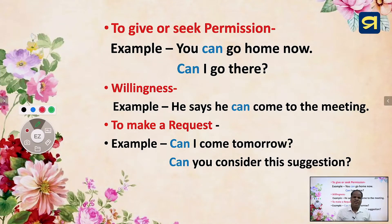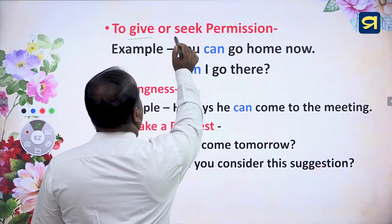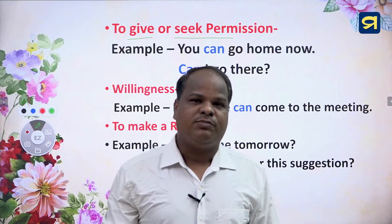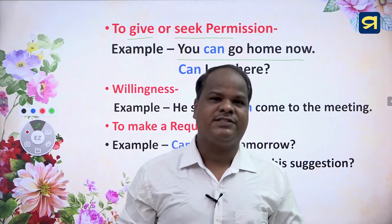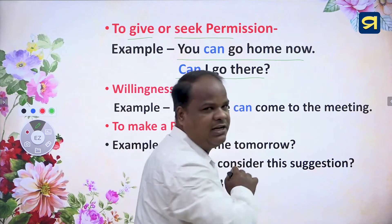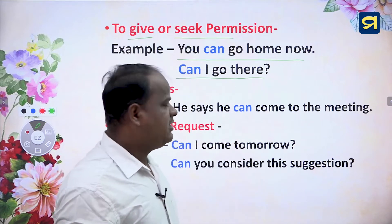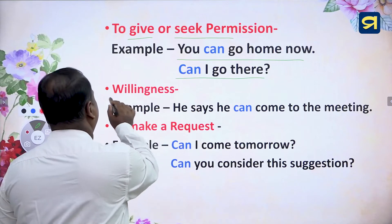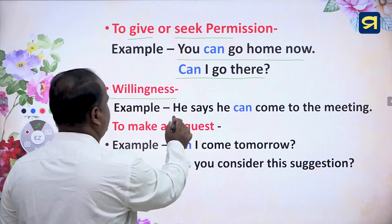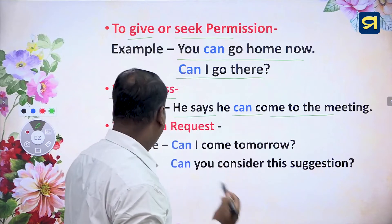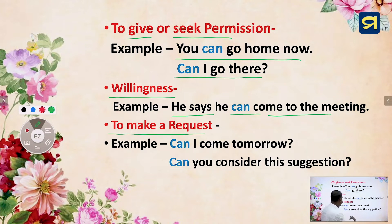'Can' is also used to give or seek permission. When we give permission, we use a positive sentence such as 'You can go home now.' When we seek permission, we use an interrogative sentence such as 'Can I go there?' Can is also used for willingness — 'He can come to the meeting' — and to make a request: 'Can I come tomorrow?' or 'Can you consider this suggestion?'